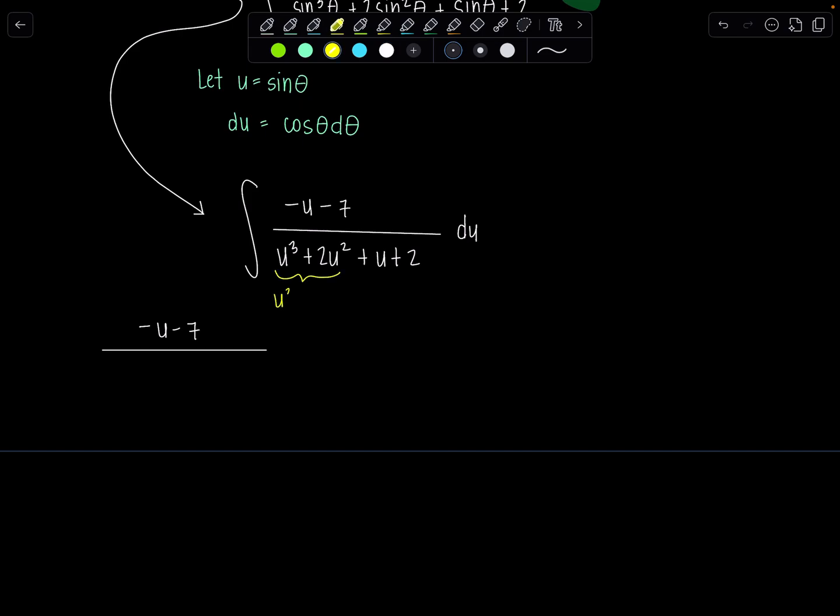Notice you could take out a u squared from these two terms and you have u plus 2 and then similarly here that's basically 1 times u plus 2. So the denominator will factor into u squared plus 1 times u plus 2.